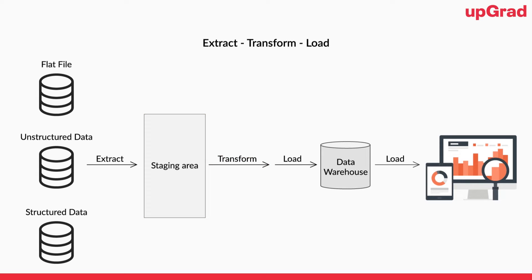Once the data has been normalized and transformed, and we have removed everything that is not supposed to go through, the final layer is loading — loading into the data storage layer. Most of the time, when we have an ETL pipeline, the layer where we actually store the data is called a data warehouse. We'll be talking about the data warehouse in detail in coming videos.